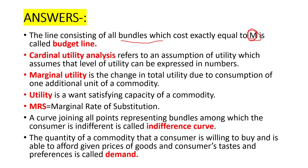Second question: cardinal utility analysis. It refers to an assumption of utility which assumes that the level of utility can be expressed in numbers. Third question: what is marginal utility? It is the change in the total utility due to consumption of one additional unit of a commodity.